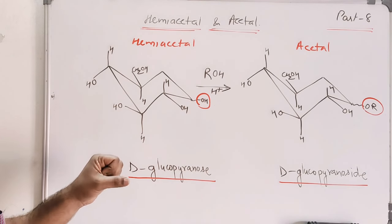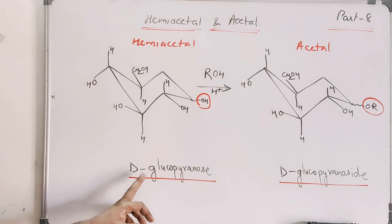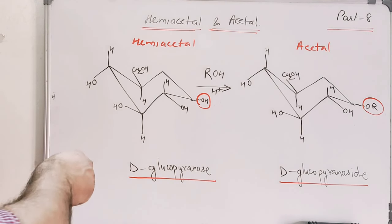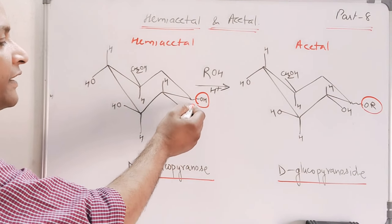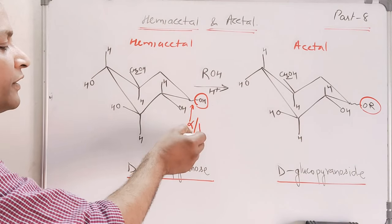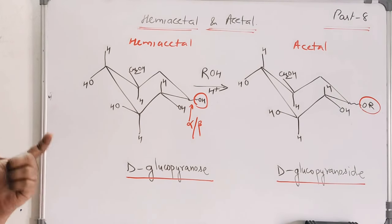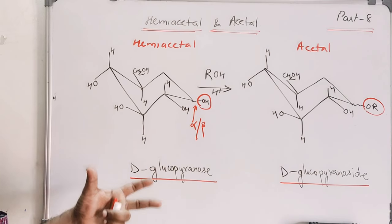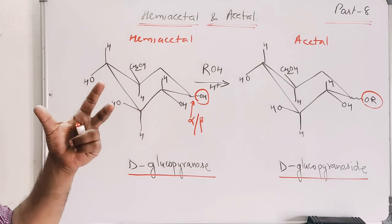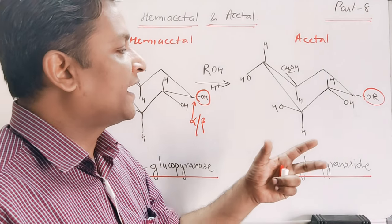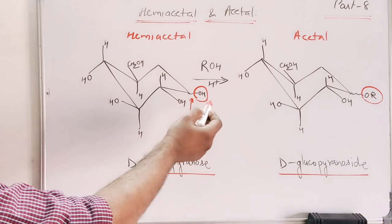This is the reaction — I'm writing glucose in a six-membered ring form and in a chair form. The name of this compound is D-glucopyranose. This bond, indicated by this arrow, can be alpha or beta — the anomeric configuration can be alpha or beta. When we treat glucose with alcohol in the presence of a trace of acid, we observe the synthesis of a compound known as acetal.